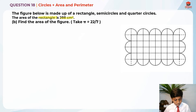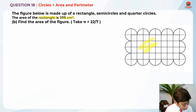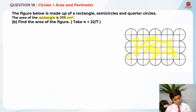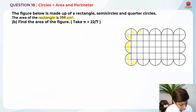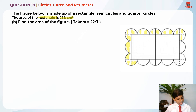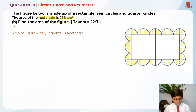To find the area of the figure, we take the area of the rectangle — 288 cm² — plus the area of all the quadrants. When we cut the semicircles in half we get quadrants. Let me highlight all the quadrants. When you count them all up, there are 28 quadrants, plus the one rectangle.